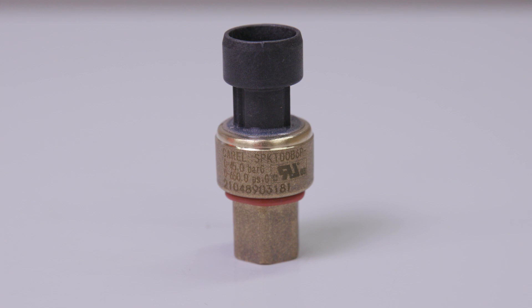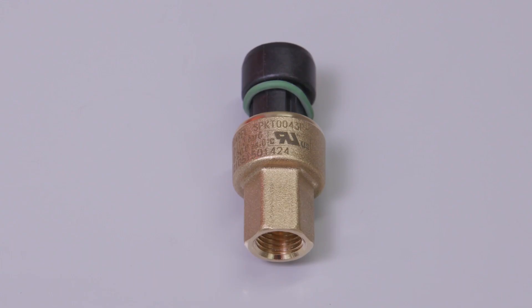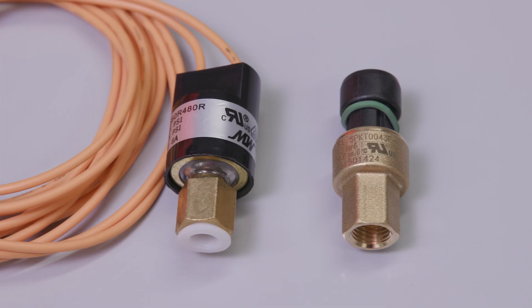The operating range of the transducer can be seen embossed on the side of the transducer. A pressure transducer should not be mistaken for a pressure switch.